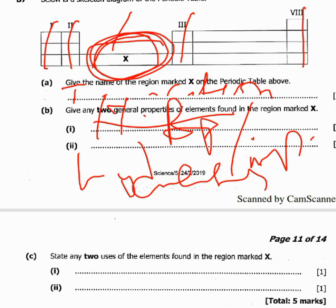We come to part C, which says: state any two uses of the elements found in the region marked X. The first use is that these elements are used as catalysts. The reason is that most of them are able to speed up chemical reactions.